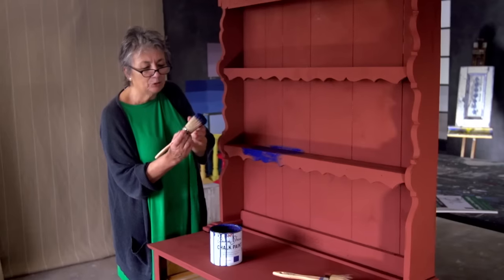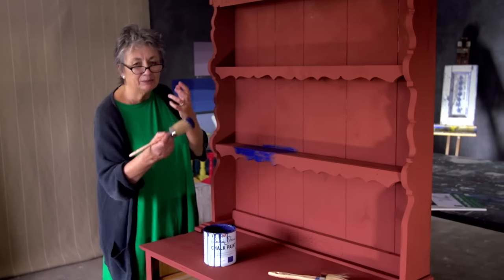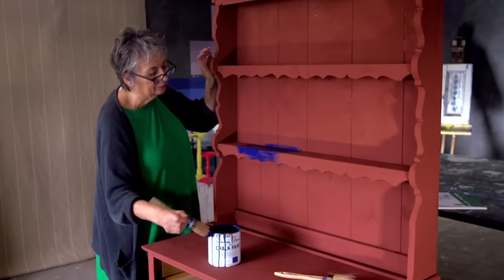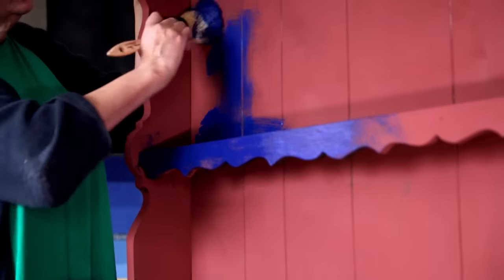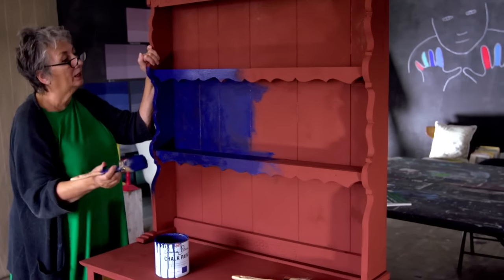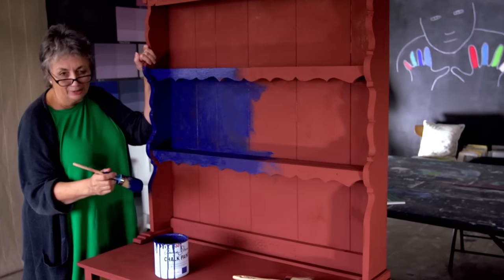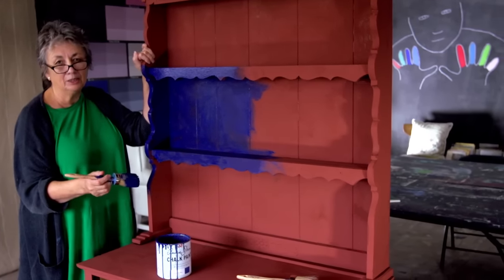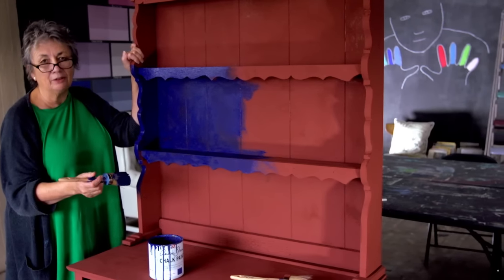The brush is a little bit damp because I've washed it and I quite like that because it makes it flow a little bit more easily. I'm going to have a lot of the Primer Red showing through. So I'm going to finish painting this and let it dry, and then in my next video I'm going to show you how to wax it and sand it for a really great rustic finish.